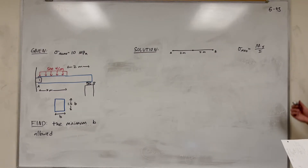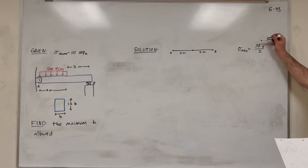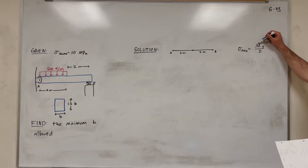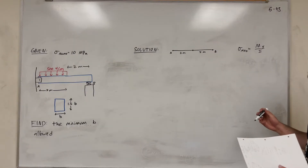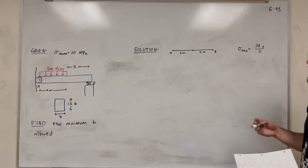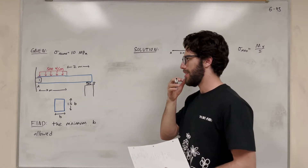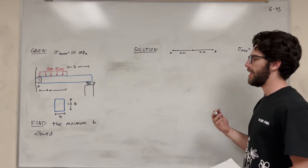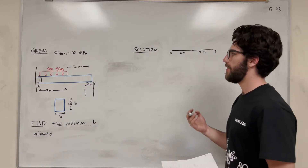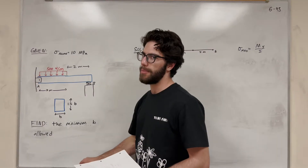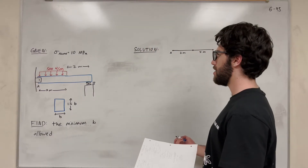The first thing we need to find is where the moment is maximized. Because we know the bending stress maximum is 10 MPa, and we need to maximize our moment to find where it's going to be the biggest so we can use that. So let's go ahead and draw a moment diagram — that's what we need when we need to find the maximum moment. To do that, we first need a free body diagram.